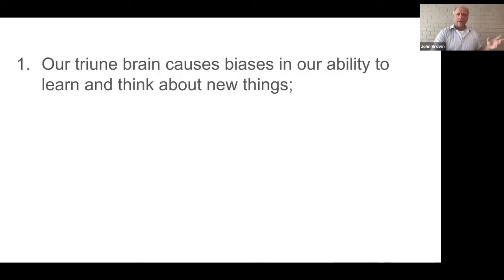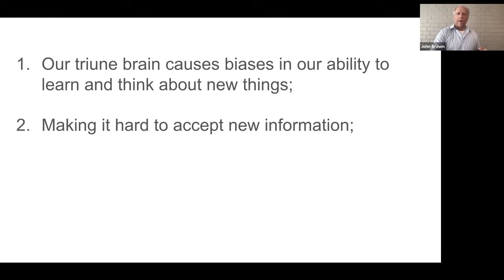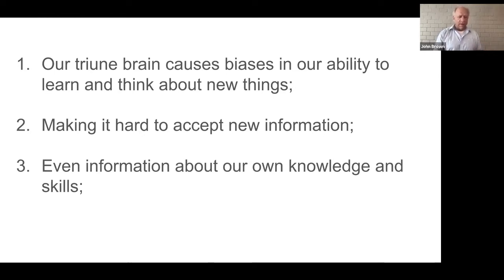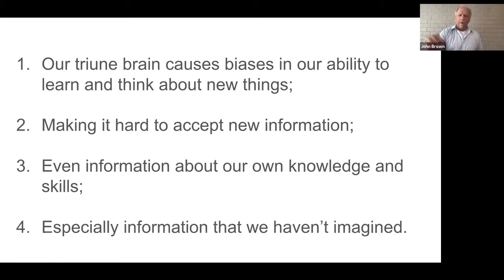So by the time we get around to trying to think rationally, we've got biases in place that we've created ourselves just because of the natural way that our brain operates at these three different speeds. Given that this triune brain creates these biases in how we learn and think about new things, and given that it makes it hard for us to accept new information, even when that information is about our own internal knowledge and skills — it especially limits us in understanding and accepting the things that we haven't even imagined we might have to think about.